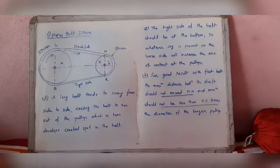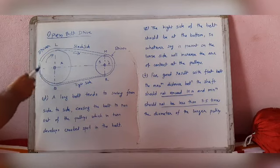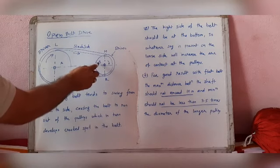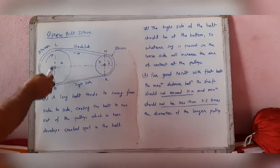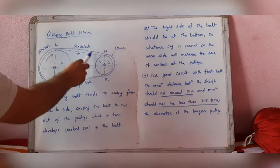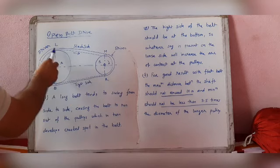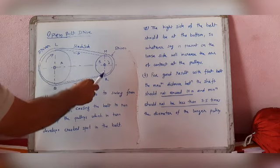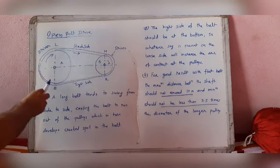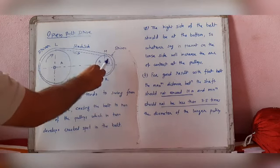This is the open belt drive. Here, the bigger pulley is the driver, keyed at point A, and the smaller pulley is the driven, keyed at point B. The points of contact of the belt are L and Q on the tight side, and M and R on the slack side. Pulley A rotates in the clockwise direction.